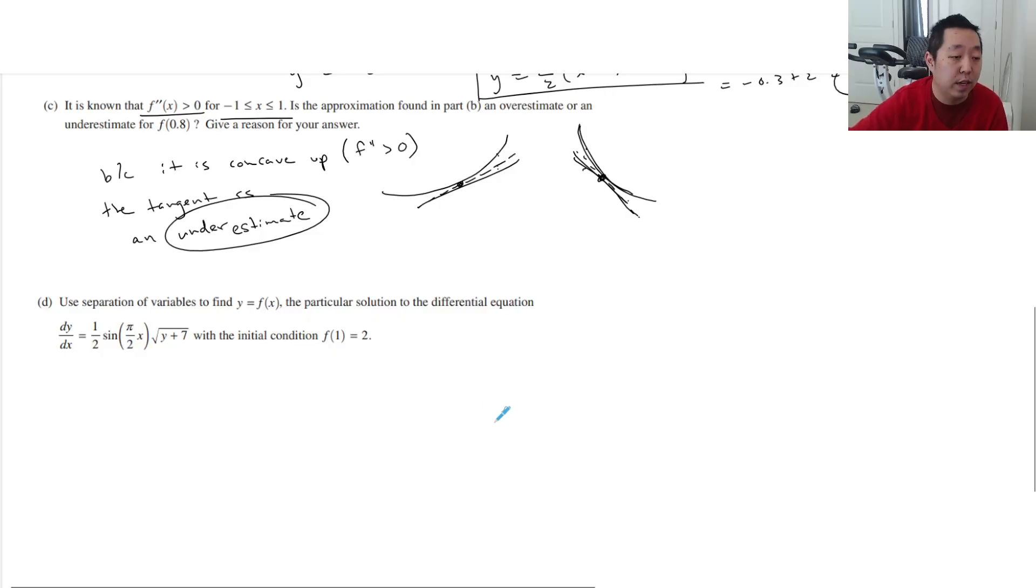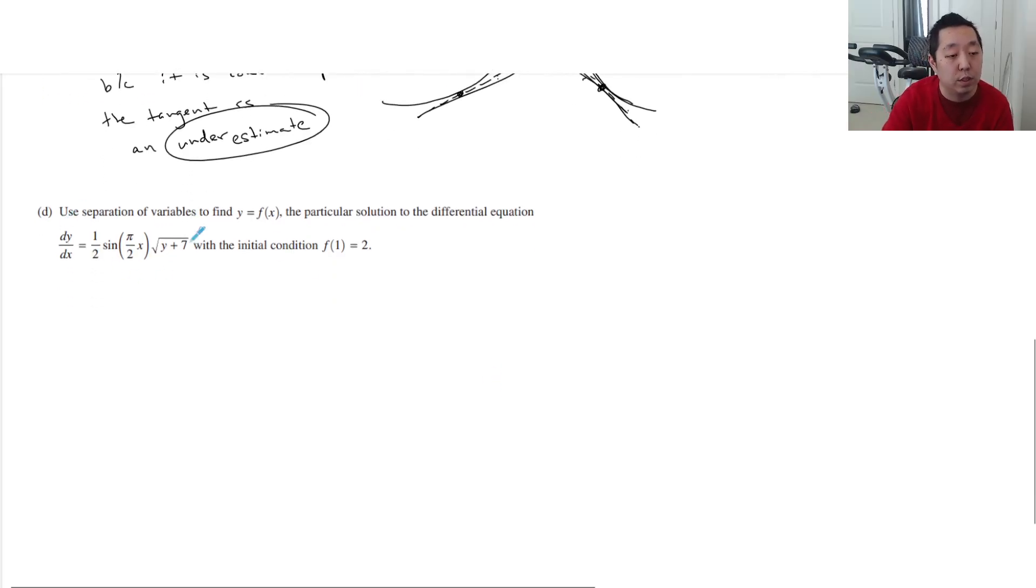Use separation of variables to find the particular solution to this differential equation. So I always put it first. I put the dx up. So dy one half sine pi over 2x square root of y plus 7 dx. And then I'm just going to bring this to the other side dy over square root of y plus 7 equals one half sine pi over 2x dx.